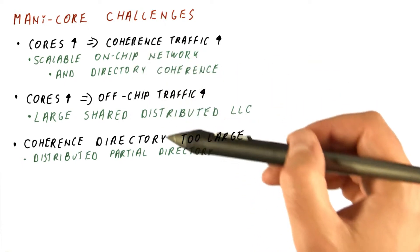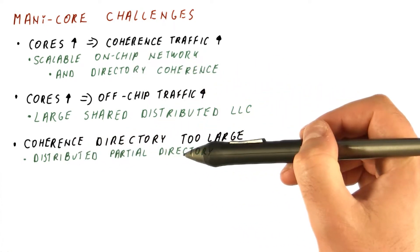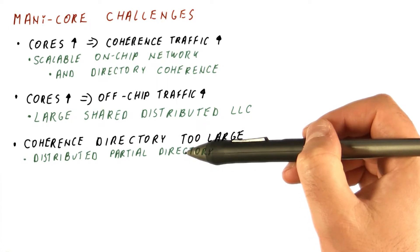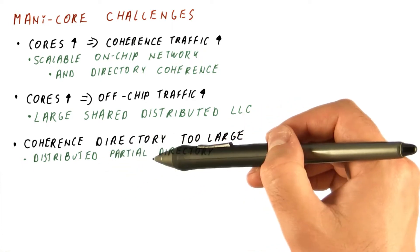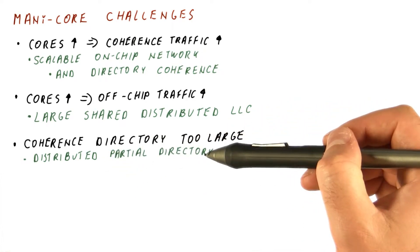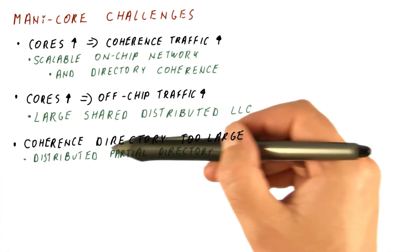And we have also seen a way to have a directory that will support our on-chip network. And that solution was, as we have recently seen, a distributed partial directory, which doesn't keep information for every possible block in memory. It only keeps information for a limited number of blocks and has a replacement policy and invalidates on-chip caches as a result of such replacements.